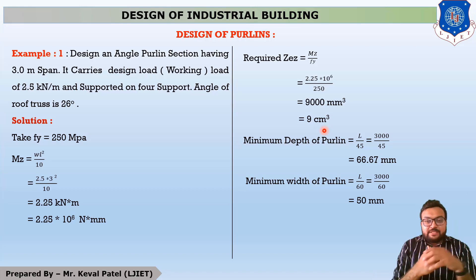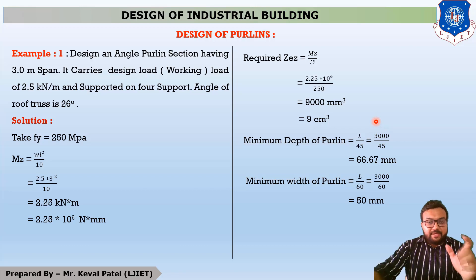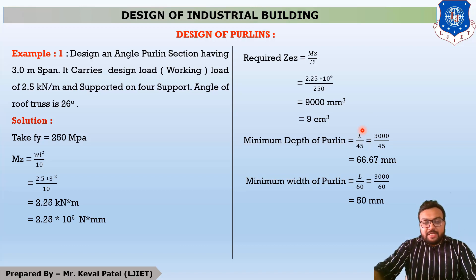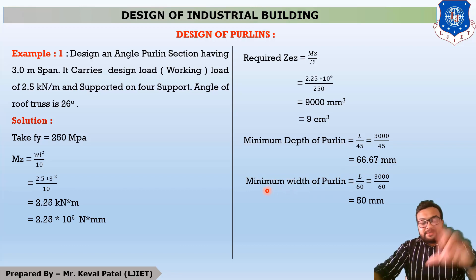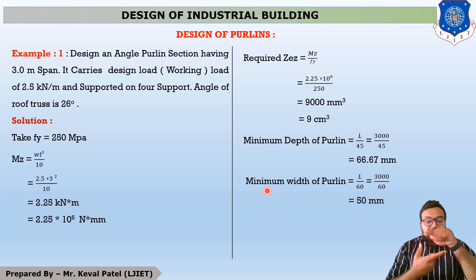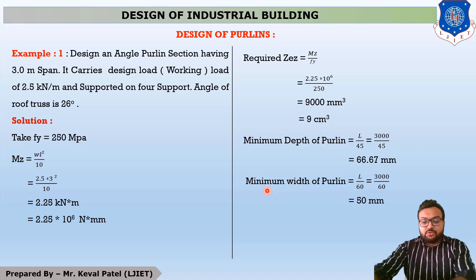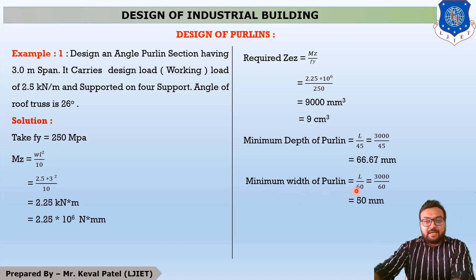The second condition is the minimum depth required for the purlin section, which is L divided by 45, where L is the span or spacing of roof truss. With L equal to 3000 mm, the minimum depth is 3000 divided by 45, giving 66.67 mm. The third condition is for minimum width because an angle section has both depth and width. The minimum width of purlin is L divided by 60, giving an answer of 50 mm.